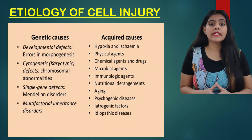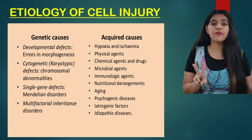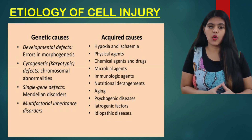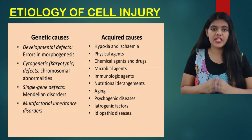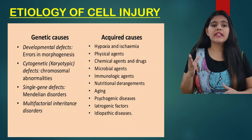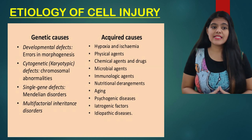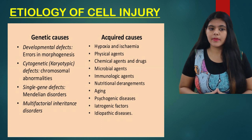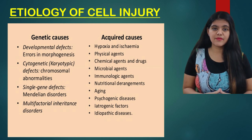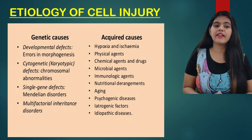The next topic is the etiology of cell injury, which is classified into two types: genetic causes and acquired causes. Genetic causes, as the name suggests, are present by birth. For example: developmental defects — that is, errors in morphogenesis; cytogenic defects — that is, chromosomal abnormalities; single gene defects — that is, Mendelian disorders; and multifactorial inheritance disorders.